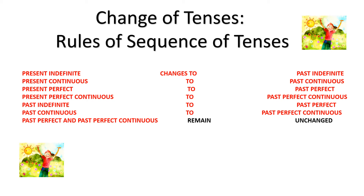These are the tenses and this is the rule of sequence of tenses. If your sentence is in present indefinite, it will change to past indefinite. Present continuous will change to past continuous. Present perfect to past perfect. Present perfect continuous to past perfect continuous, and past continuous to past perfect continuous. Past perfect and past perfect continuous will remain the same.